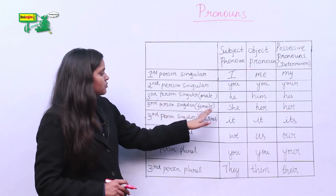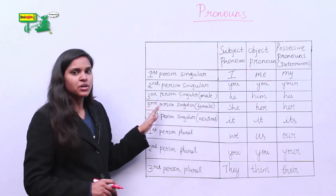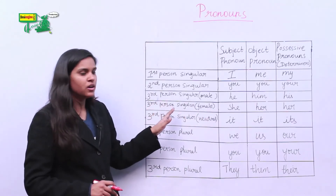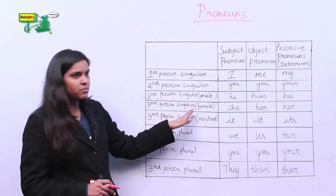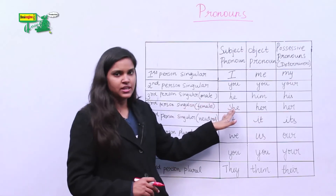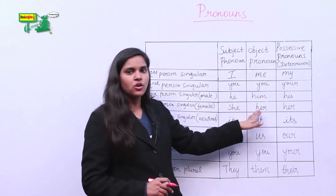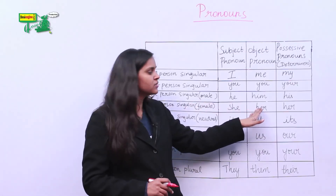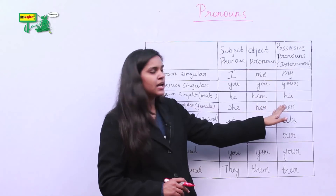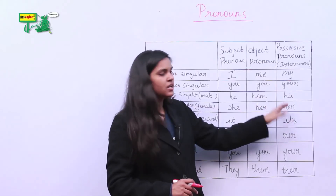The subject pronoun of third person singular female is she, the object pronoun is her, and the possessive pronoun is her.